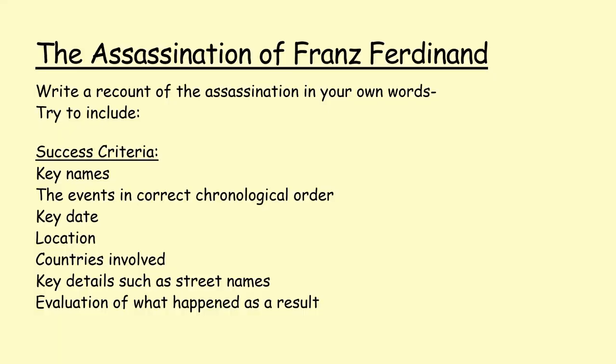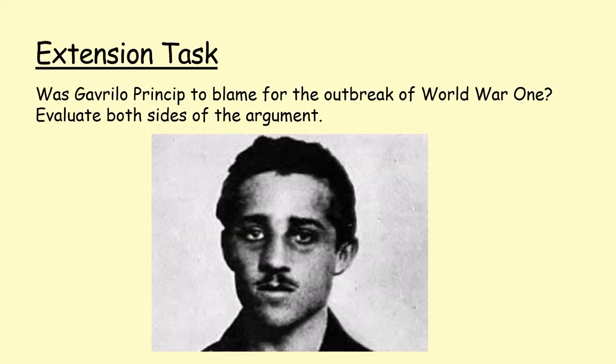Your task for today: you are going to write your own recount of the assassination event in your own words, including the key names of the assassins and the person assassinated and his wife. Make sure you have the events in correct chronological order, the date and location, the countries involved, key details such as street names, and an evaluation of what happened as a result of those gunshots. If you finish quickly, there is an extension: an evaluation of whether you think Gavrilo Princip is to blame for the outbreak of World War One, looking at both sides of the argument. A little bit of extra research may be beneficial to answer that question.